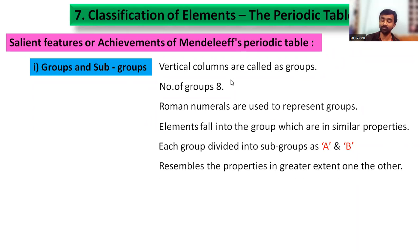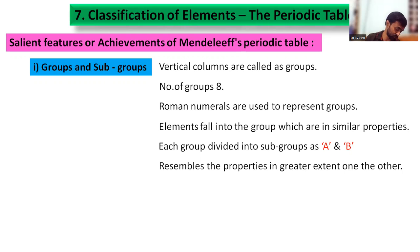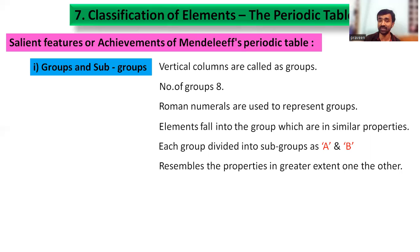Elements in a group show properties that increase in greater extent as you go down. For example, in group 1A — hydrogen, lithium, sodium, potassium, rubidium, cesium, and francium — the characteristic property increases from one element to the next going down the group.